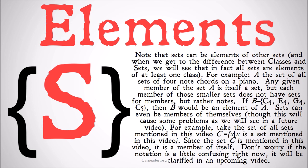The only things that are in A are other sets. No notes are in A, simply sets. Each member of the smaller sets within A does not have sets for members, but rather notes. So if B is the set of C4, E4, G4, and C5 — those are all notes on the piano — then B would be an element of A because A is defined as the set of all sets of four-note chords on the piano. B is a set of four notes that form a chord on the piano, so B is a set which is a member of A. But any of those individual notes — C4, E4, G4, or C5 — are not members of A because A is only defined as having as members sets, not notes.